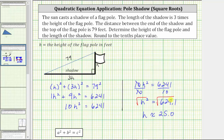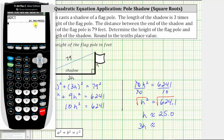We also have to find the length of the shadow, which is 3h. Instead of using the rounded value of h, let's go back to the calculator and use the full decimal — a better approximation of h — and then multiply by 3. We press times 3, which multiplies the previous answer by 3. Notice there is a 9 in the tenths place value and the digit to the right is a 4, which means we round down. This rounds to 74.9.